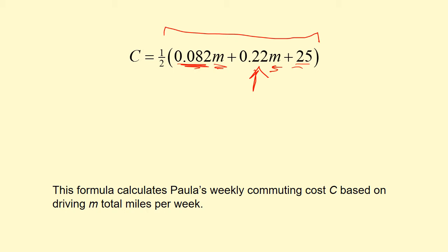These are all the expenses Paula incurs when she carpools with her friend. Since there are two of them, they split it. The expression under the bracket represents all of the costs of carpooling, and the one-half reflects the fact that they're going to split those costs.